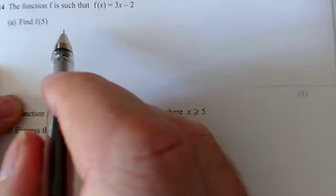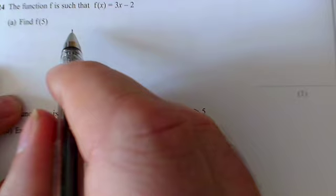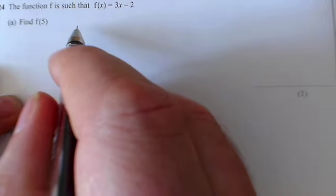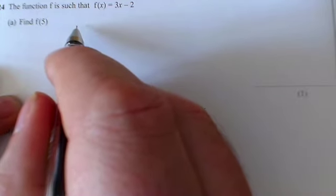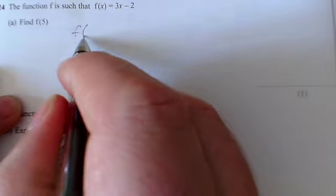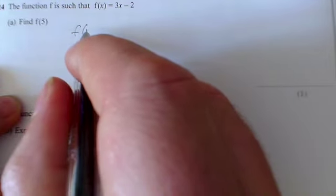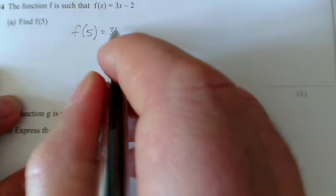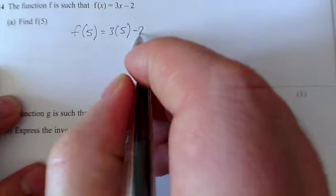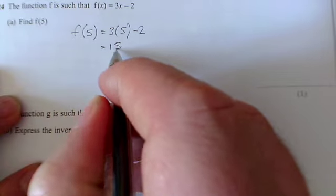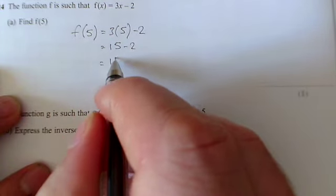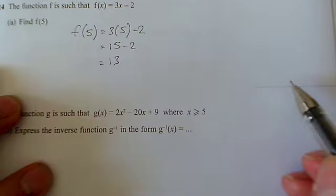Here we have a functions question. The first part is only one mark, but it's nice to do it properly. When you substitute, please replace the x with a bracketed 5. So f(5) means we take the x out and replace it with a bracketed 5. So here we go: 3(5) - 2, which is 15 - 2, so the answer is 13. One mark, lovely.